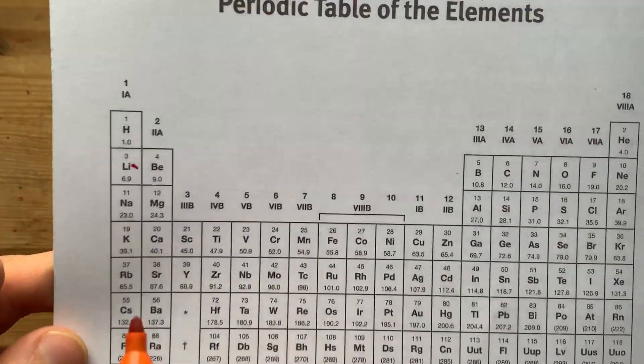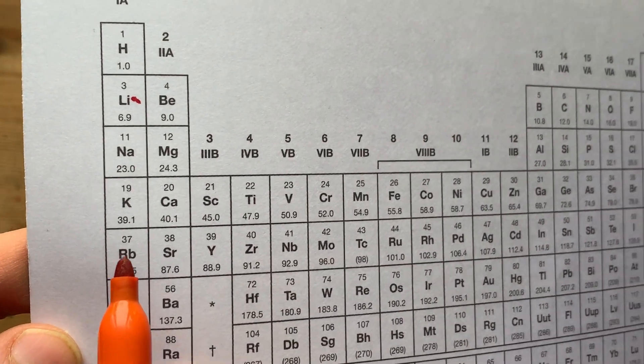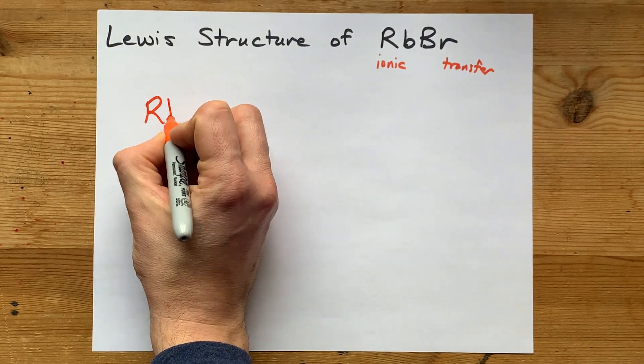To watch how that happens, let's take a look at where the electrons are to start with. Rubidium in group one brings one valence electron with it.